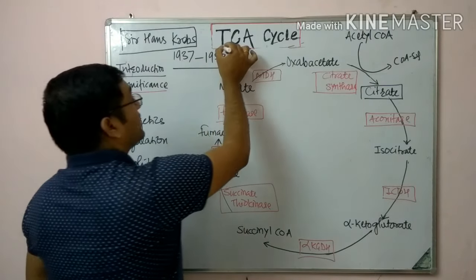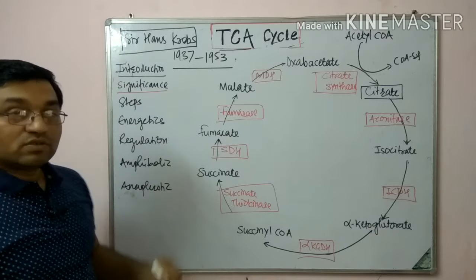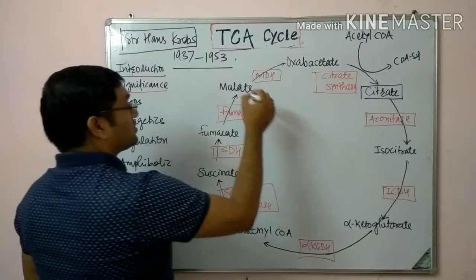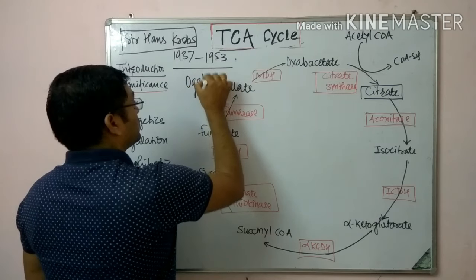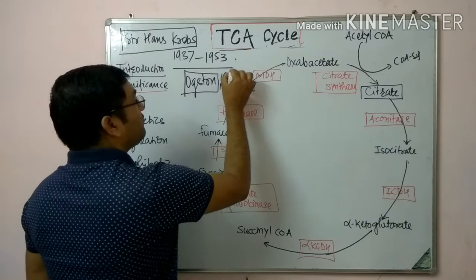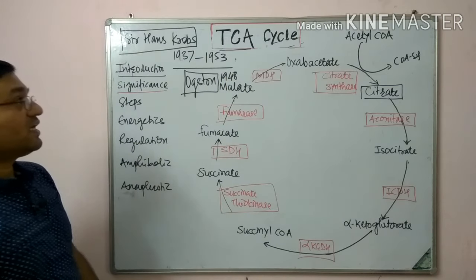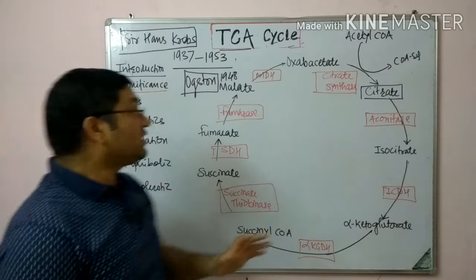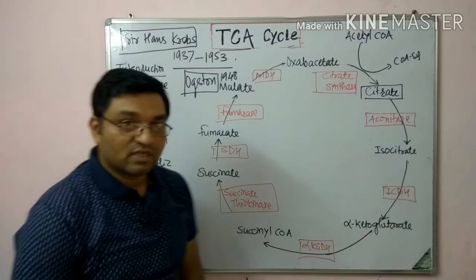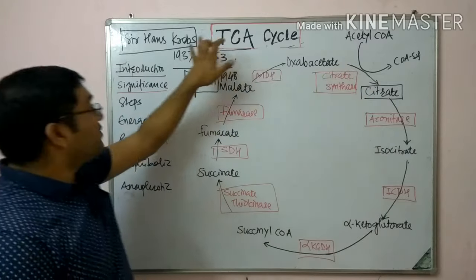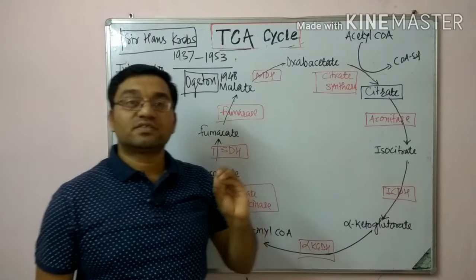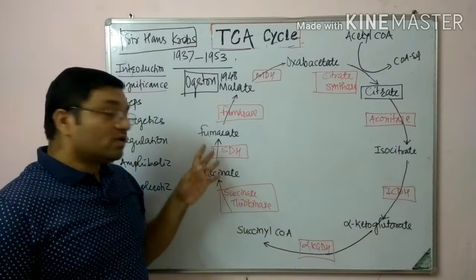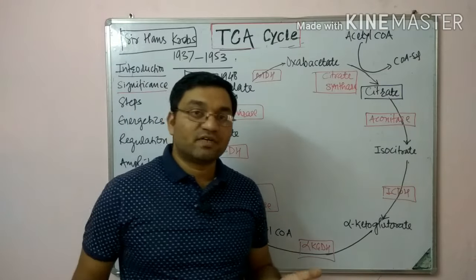This tricarboxylic acid cycle was later known by the name citric acid cycle. Later in 1948, Ogden described that the tricarboxylic acid described by Hans Krebs is citric acid. That's why another name for this cycle is the citric acid cycle, TCA cycle, citric acid cycle, Krebs cycle, or metabolic traffic circle — as a number of intermediates from this Krebs cycle are important metabolic intermediates in other pathways.